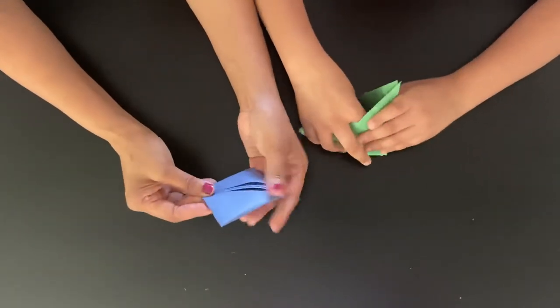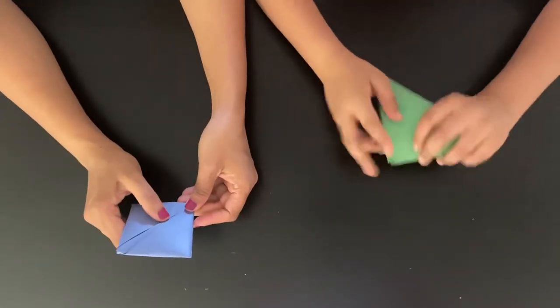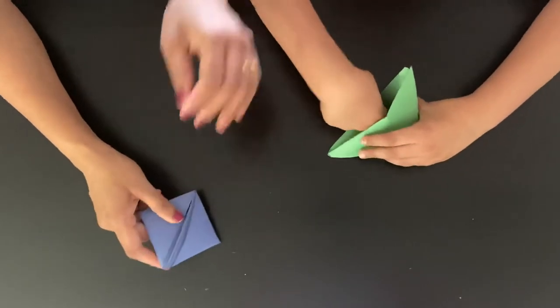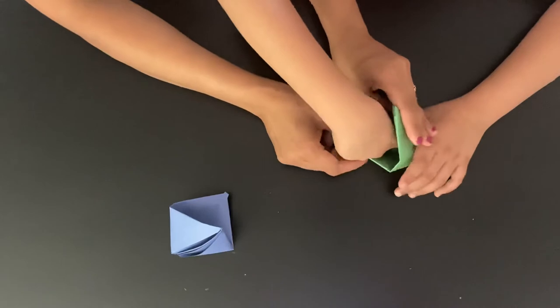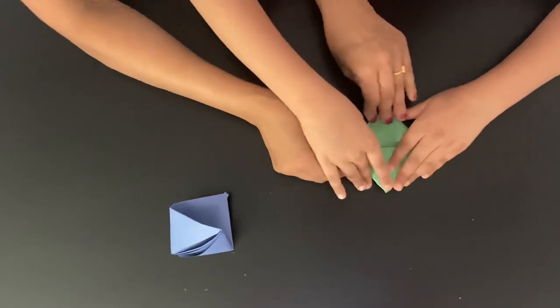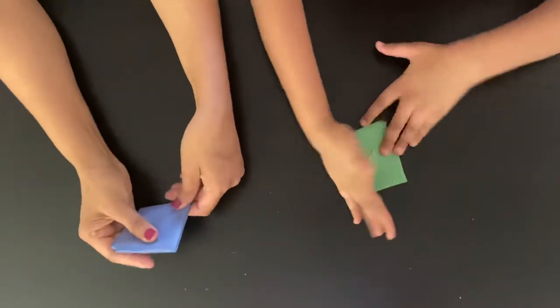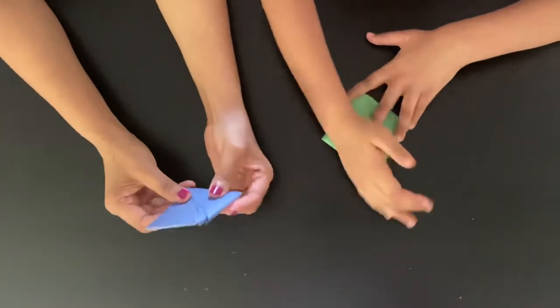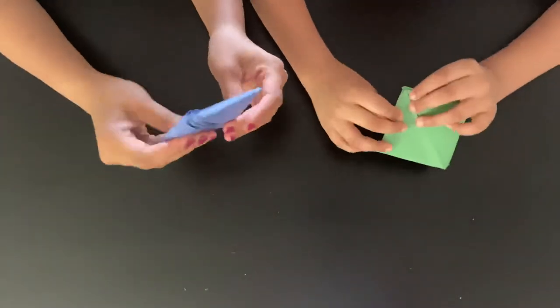And then you fold it like this. So you can see we have this shape. Here you'll see this square shape again.